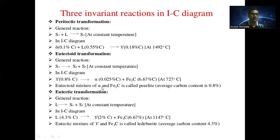The third transformation is the eutectic transformation. The general reaction is: liquid gives S1 plus S2 at constant temperature — the liquid phase converts into two solid phases. In the iron-carbon equilibrium diagram, the liquid containing 4.3 percent carbon gives austenite (2 percent carbon) and cementite Fe₃C (6.67 percent carbon) at 1147 degrees Celsius. This eutectic mixture of austenite and cementite is called ledeburite, with an average carbon content of 4.3 percent.